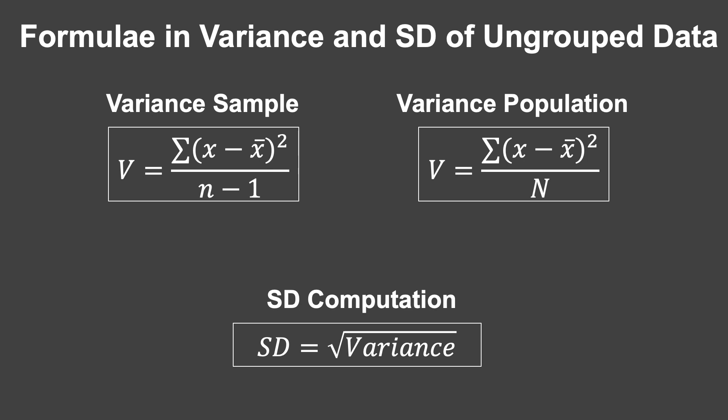Here are the formulas for getting the variance and standard deviation of ungrouped data. For variance, we have two formulas. The variance for the sample size uses the formula: σ(x − mean)² all over n − 1. For the population, the formula is v = σ(x − mean)² all over n, where n is the population size. To get the standard deviation, the formula is the square root of the variance.